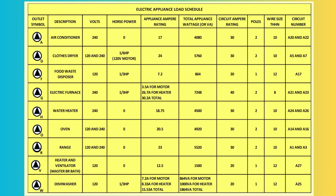The electrical appliance load schedule details the specific electrical loads of appliances and equipment. It includes circuit numbers that match with the electrical panel for correlation, descriptions specifying appliances or systems such as oven, refrigerator, air conditioner, and water heater, and voltage requirements indicating whether the appliance operates on 120V or 240V. Appliance load information includes ampere rating, wattage in kilovolt amperes, and horsepower for motors and large equipment like air conditioners and dryers. Poles identify whether the circuit uses single-pole or double-pole breakers. The schedule is used for electrical load management, ensuring balanced distribution of power across circuits to prevent overloading, meeting electrical safety standards by correctly sizing breakers and wires, and providing a clear blueprint for troubleshooting or future upgrades.